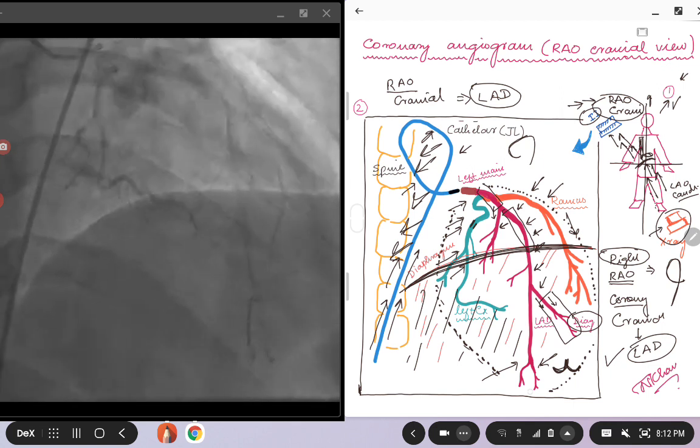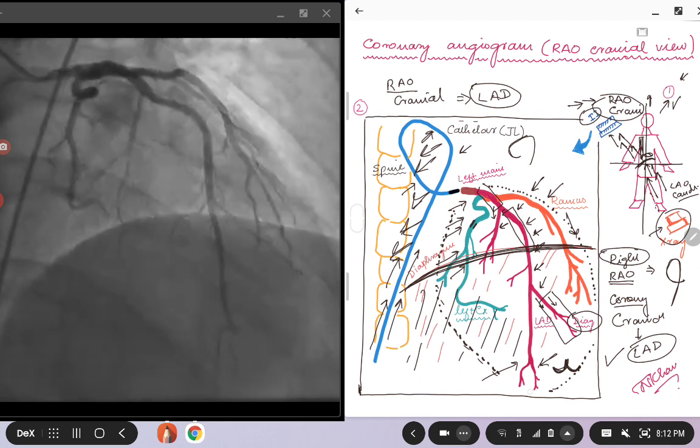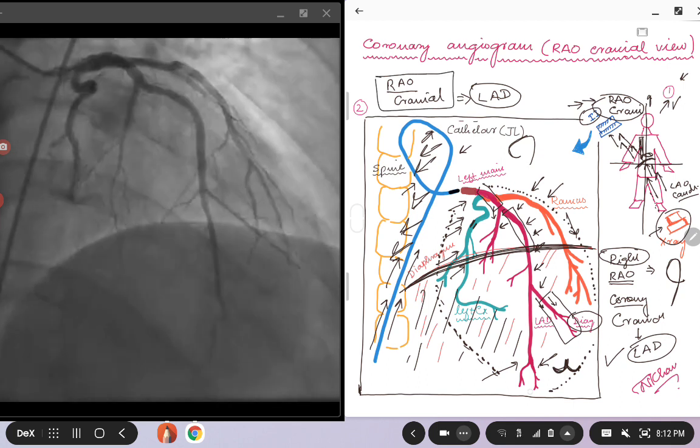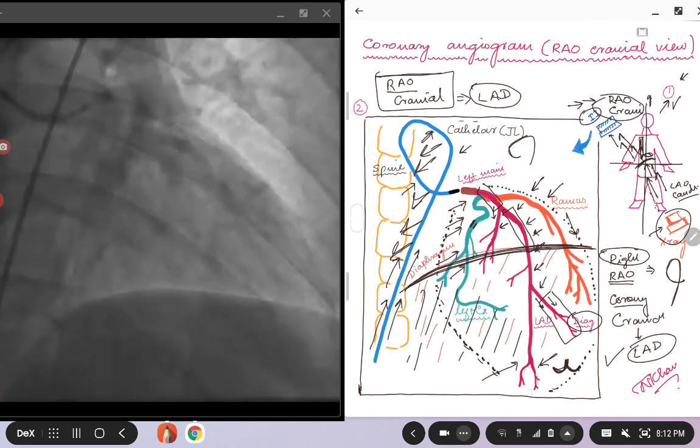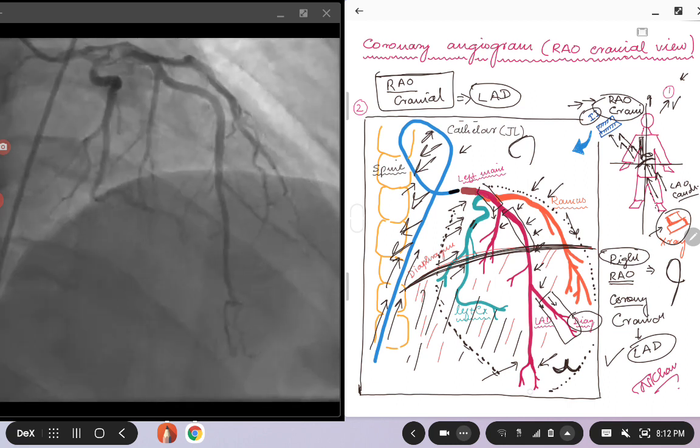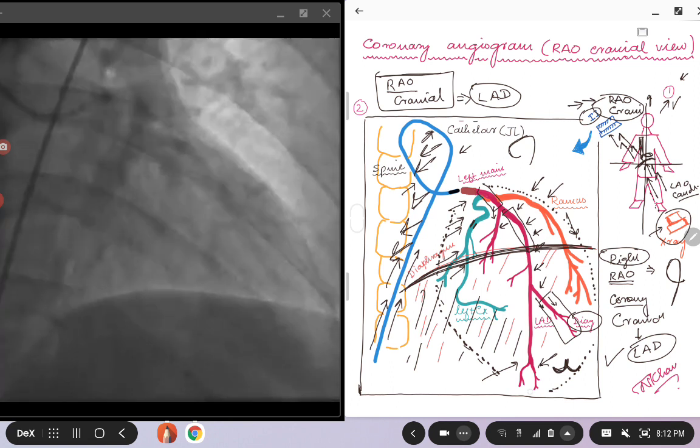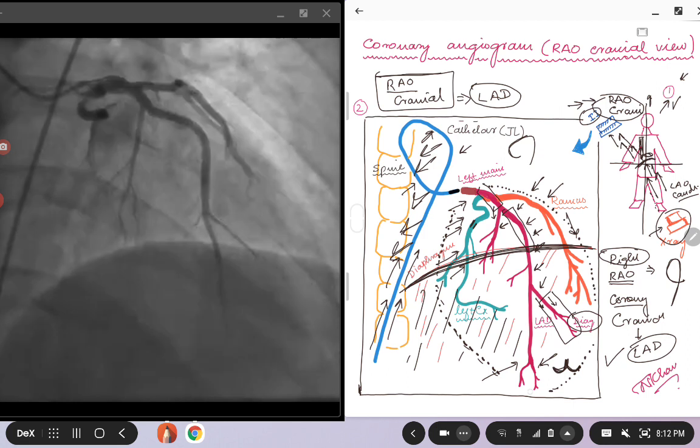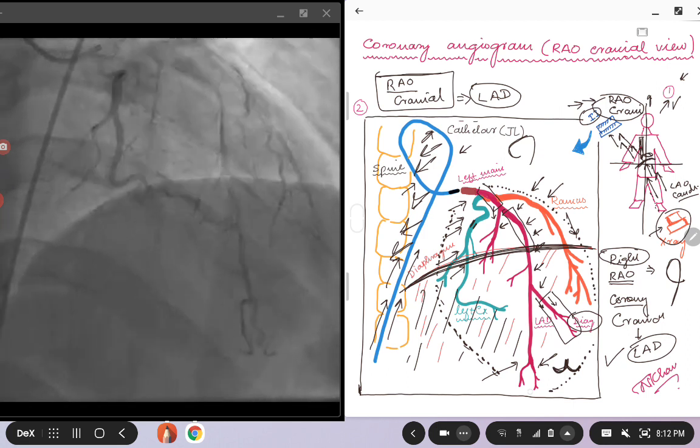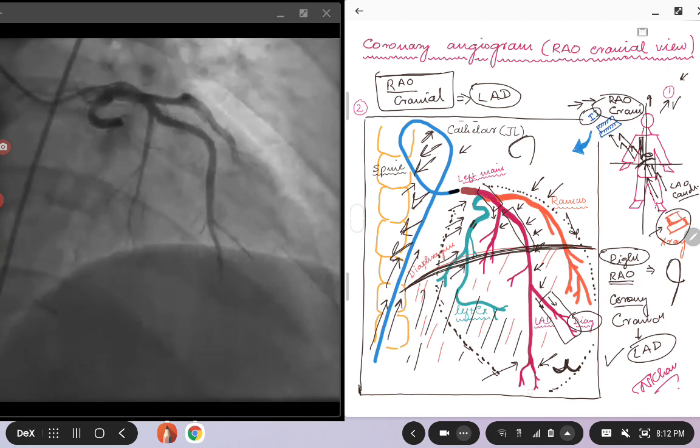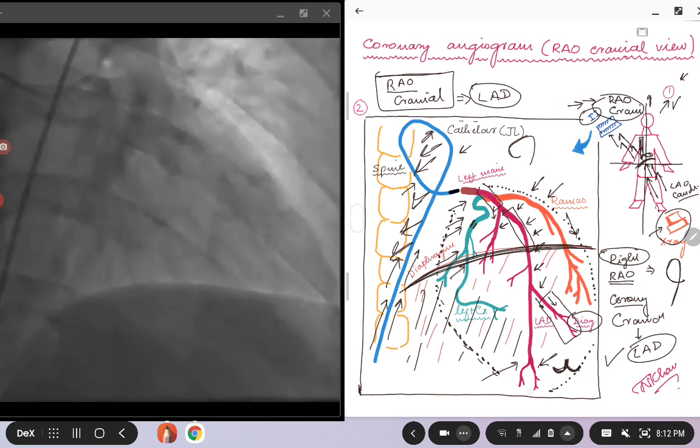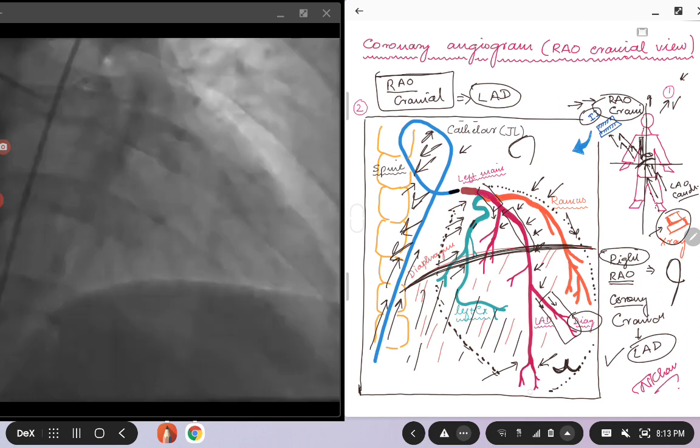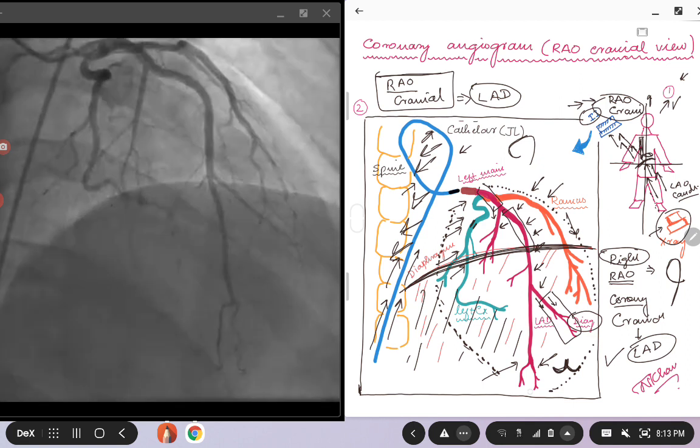This was a very quick overview, trying to put things together for the RAO cranial view. We will try to keep it very simple as we have already discussed all these things in the other views. Basically what we will be doing in these series is reinforcing the idea as to how we recognize the arteries and other mediastinal structures, trying to recognize the image. I hope this was helpful. Have a very good day.